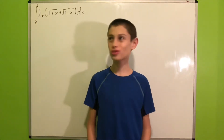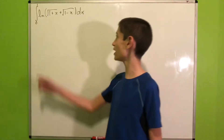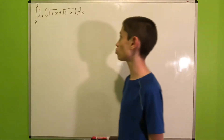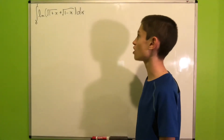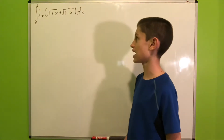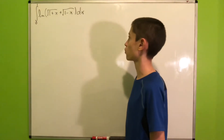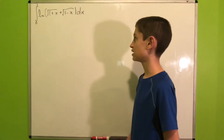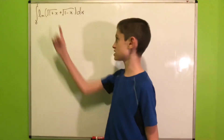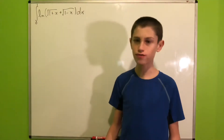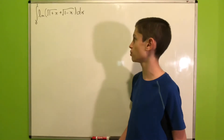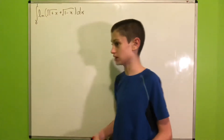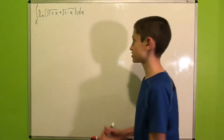Hi everyone, so today we will evaluate this integral, namely the integral from 0 to 1 of natural log of square root of 1 plus x plus the square root of 1 minus x, all with respect to x. I took this integral because it involves quite a few nice algebraic tricks to solve it. So let's get started.